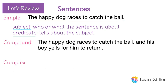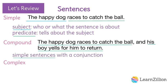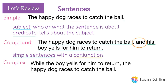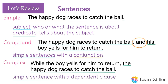'The happy dog races to catch the ball and his boy yells for him to return' is a compound sentence, combining two simple sentences with a conjunction. 'While his boy yells for him to return, the happy dog races to catch the ball' is a complex sentence — a simple sentence with the addition of a dependent clause.